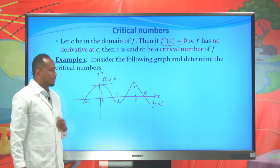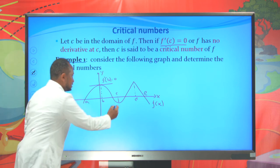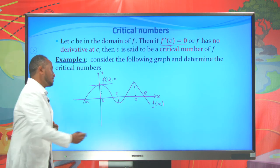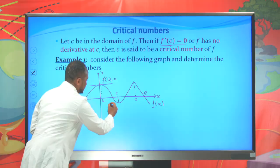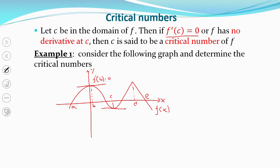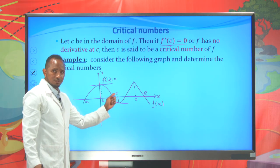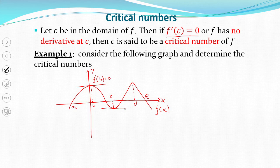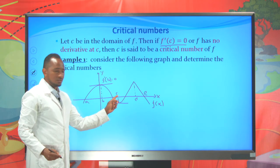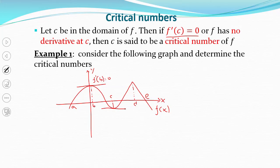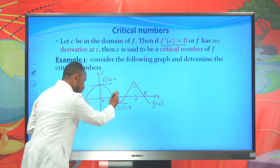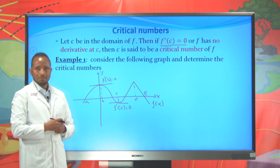Not only at point B. If you draw a tangent line at point C, you will also have a horizontal tangent line. Therefore, the derivative of this function at point C is also 0. So we have another critical number here — C is also a critical number, and F'(C) = 0.